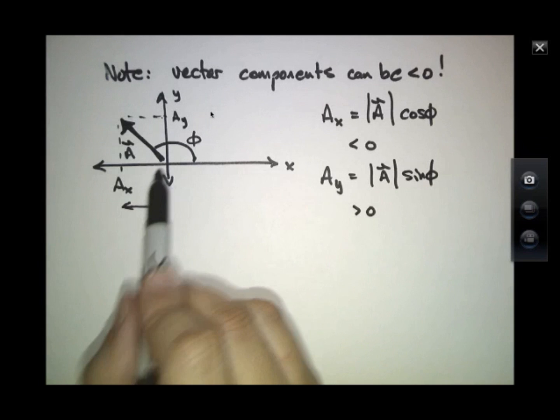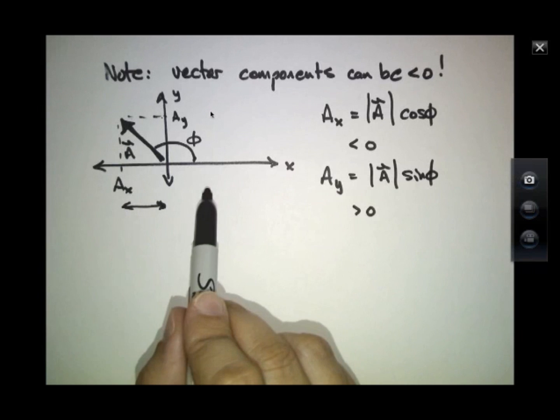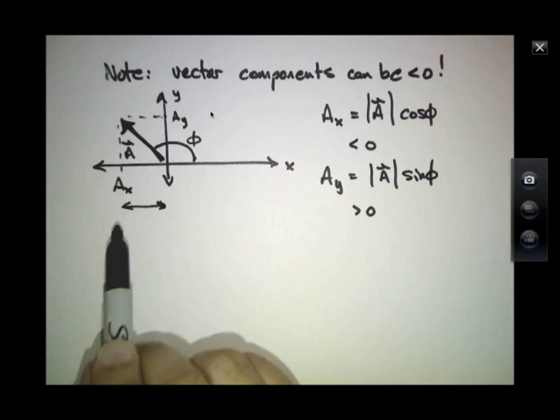It's also possible to have this vector point down here in the third quadrant. So this is first quadrant, second quadrant, third quadrant, fourth quadrant. Over here in the third quadrant, both X and Y components are negative.